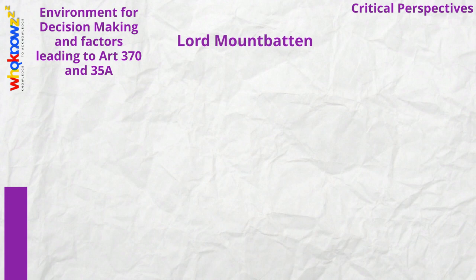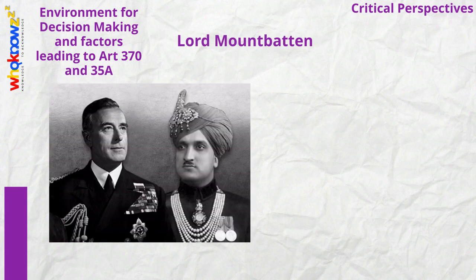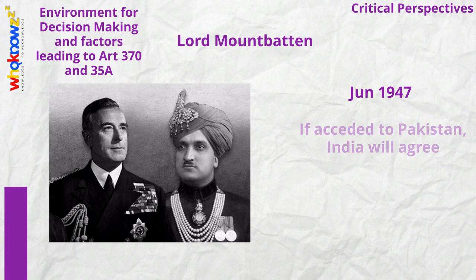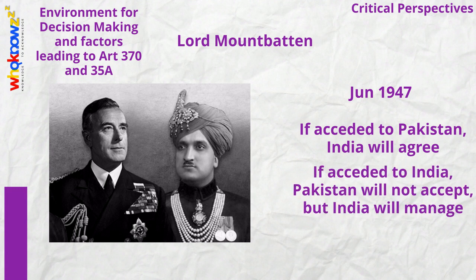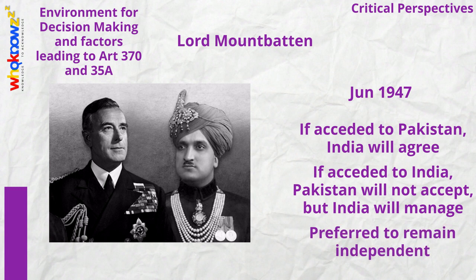Mountbatten was a friend of Hari Singh. In June 1947, he went to Srinagar and persuaded Hari Singh to decide. He indicated that if Hari Singh signed with Pakistan, India would most probably agree; and if with India, Pakistan would not accede, but India would manage. Hari Singh asked for independence, but Mountbatten said that this option was not practical. Hari Singh kept postponing his decision.